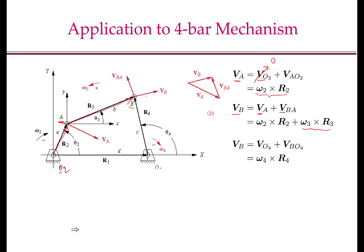Since point B moves along a circle centered at pivot O4, VB also equals VO4 plus VBO4. Since O4 is fixed, VO4 is zero, and VBO4 equals omega_4 cross R4. We have obtained the velocity of point B via two paths; since it is the same point, equating them gives the loop closure equation: omega_2 cross R2 plus omega_3 cross R3 minus omega_4 cross R4 equals zero.